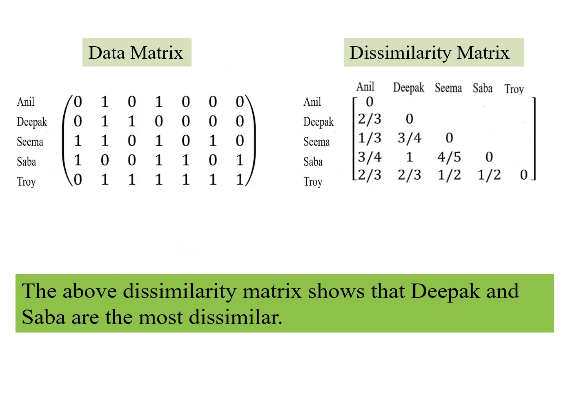So this is the data matrix and the final dissimilarity matrix computed in a manner as discussed earlier. We see there is a small observation which we can make here, Deepak and Saba. So which is this component, Deepak and Saba. Look at this, the distance is maximum. You get a value of 1, which is maximum.